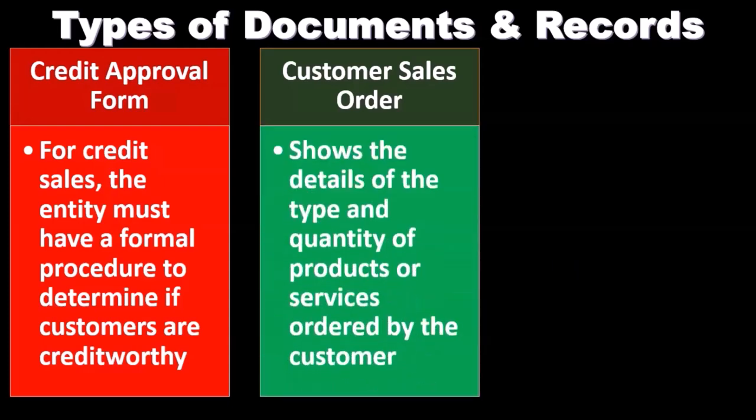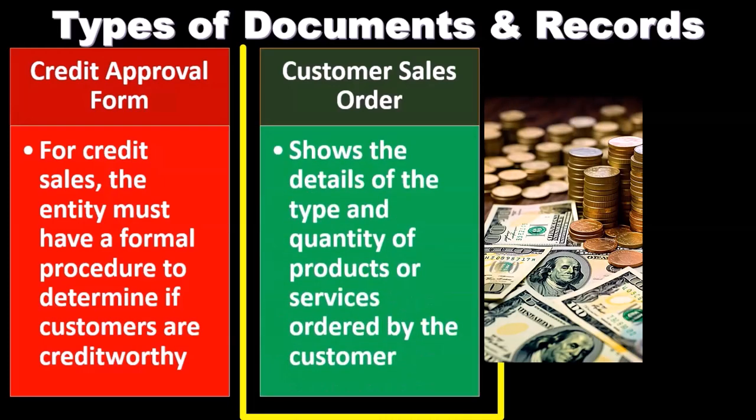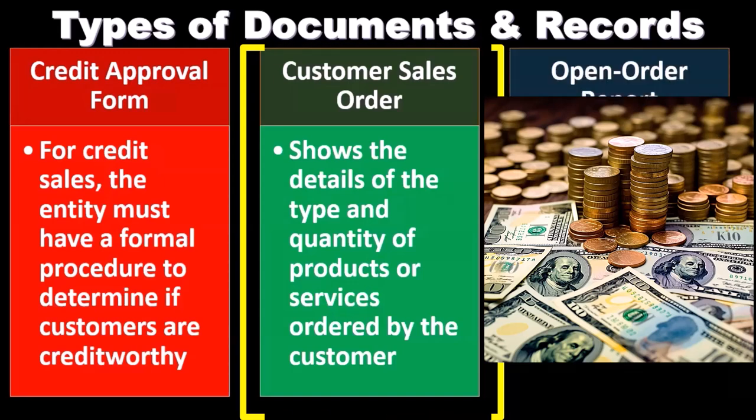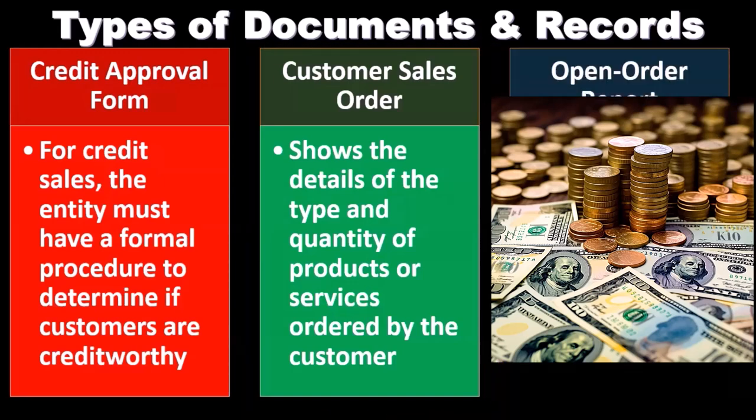Next is the customer sales order, which shows the details of the type and quantity of products or services ordered by the customer.